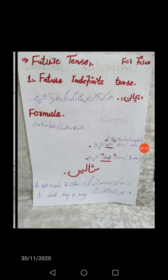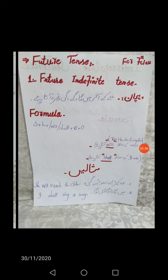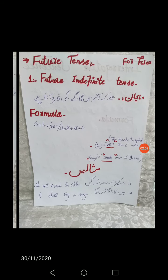You can see two examples. وہ کپڑے دھوئے گی — last پہ گی آ گیا، مطلب future indefinite tense ہے۔ Subject ہے 'وہ' یعنی she، پھر will (کیونکہ she کے ساتھ will آتا ہے)، پھر verb کی first form wash، اور object کپڑے۔ So: She will wash the clothes. دوسری مثال: میں گانا گاؤں گا۔ Subject: I، helping verb: shall، verb: sing، object: a song۔ So: I shall sing a song — یہ future indefinite tense ہے۔